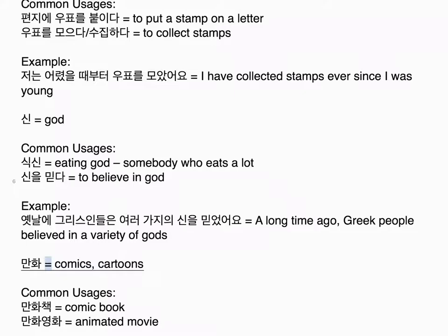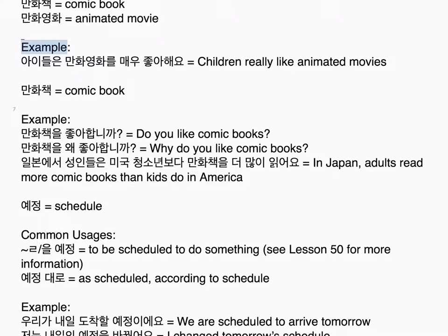신 equals god. Common usages: 식신 — eating god, somebody who eats a lot; 신을 믿다 — to believe in God. Example: 옛날에 그리스인들은 여러 가지의 신을 믿었어요 — a long time ago, Greek people believed in a variety of gods.